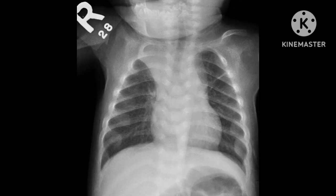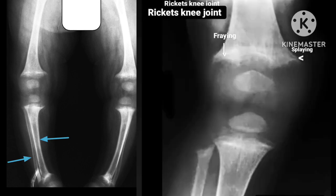In this chest X-ray you can see the expanded anterior rib ends of Ricketts — the classic rachitic rosary appearance. In this radiograph you can see bowing of the tibia and fibula of both legs. In this radiograph you can see cupping, splaying of the metaphysis of the distal tibia, and widening of the physis.